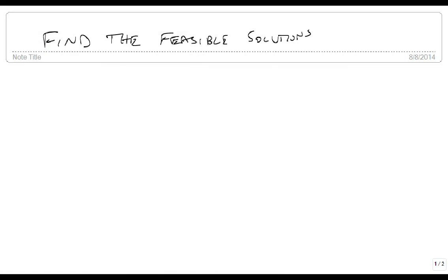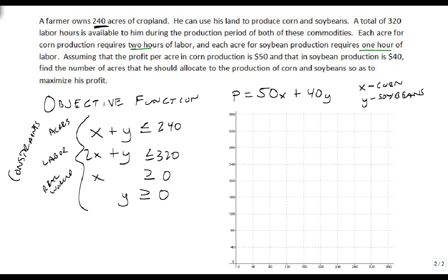We're now going to find the feasible solutions, and the way we're going to do that is we're going to just pick up where we left off and graph each of these lines. So x plus y is less than or equal to 240 means we get our dots at 240 and 240, and we just draw the line between them like so.